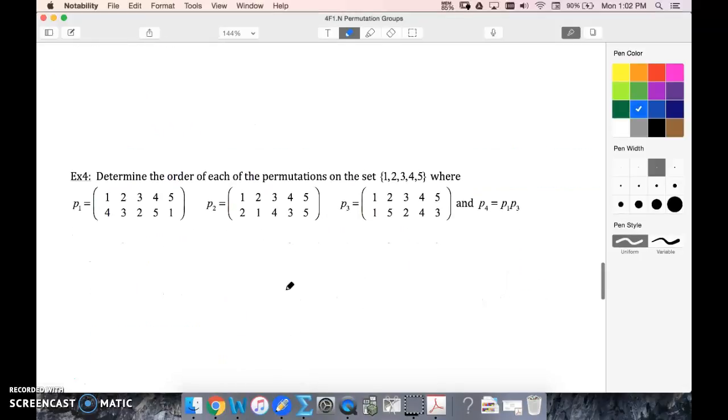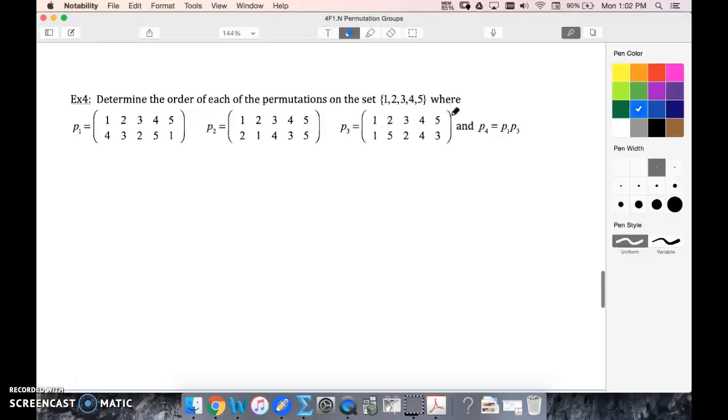So determine the order of each of the permutations on the set {1, 2, 3, 4, 5}. All right, so we know that the identity is going to be (1, 2, 3, 4, 5). So we want to know how many times we would have to perform it. Well, instead of performing the permutation over and over until we get that, instead we could look for the least common multiple of the cycles. So we need to look for cycles of our elements. I see 2 and 3 make a cycle, so I'm going to rewrite p1.